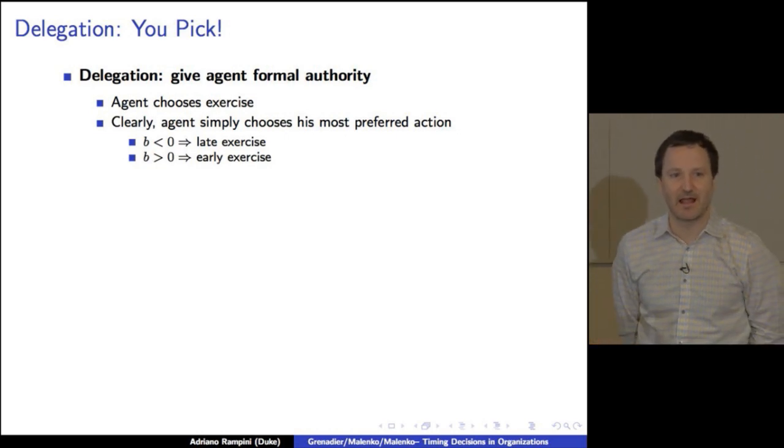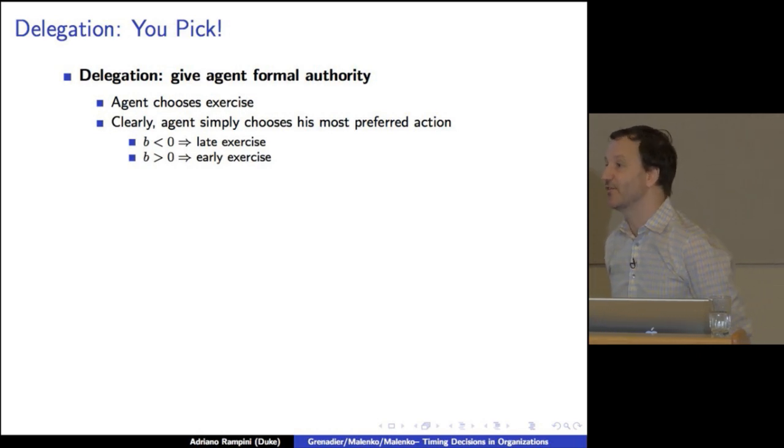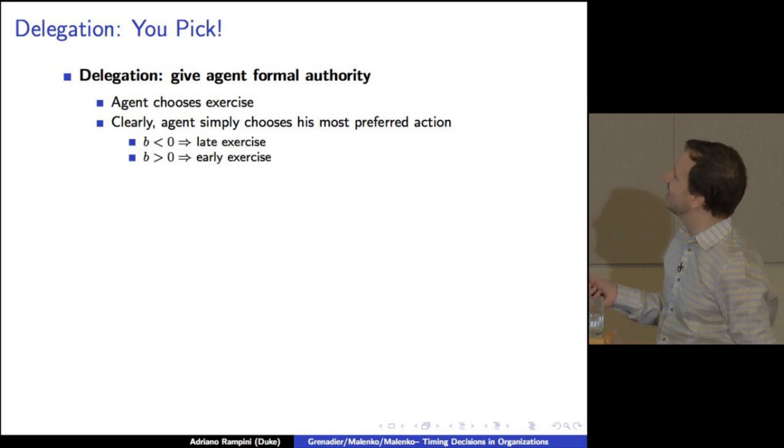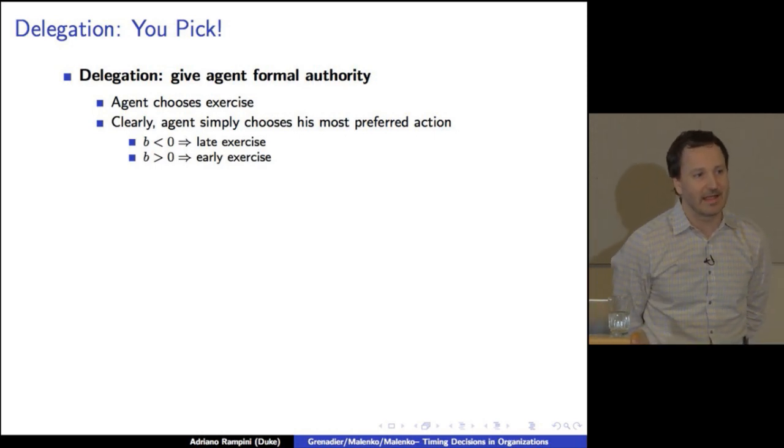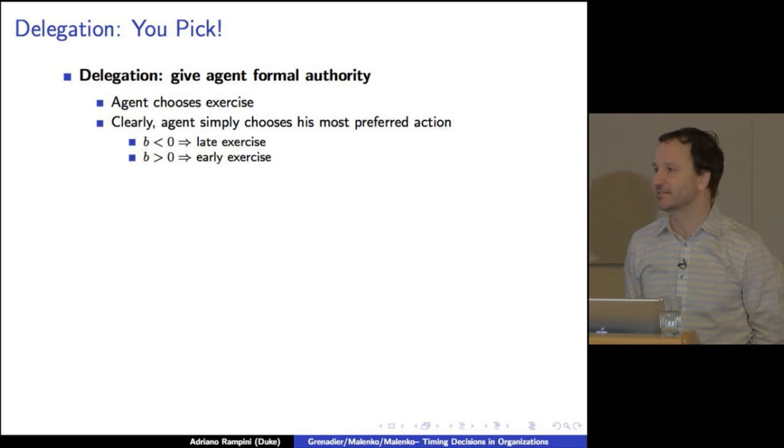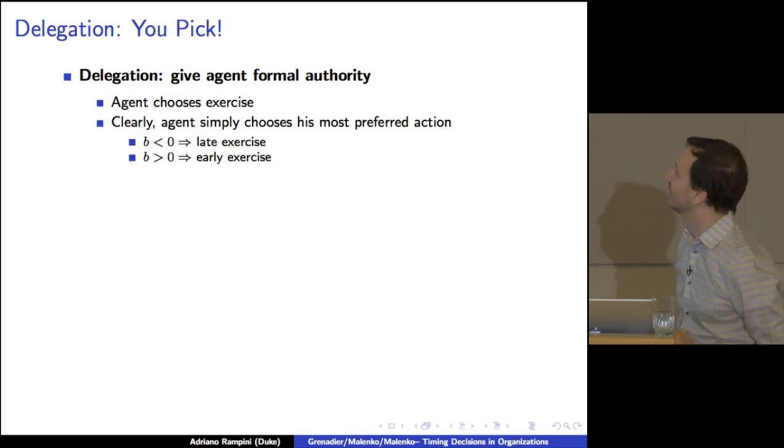Let's talk briefly about the value of delegation. So delegation, what is delegation? Again, it's just essentially the principal telling the agent, giving the agent formal authority, which is essentially telling the agent, why don't you pick? Okay. Well, it's easy to see what the agent will do. What will the agent do when he gets to pick? Well, he's just going to pick whatever is optimal for him because there's no other contracting or anything else that we can do. So if he dislikes exercise, he's going to exercise late. If he likes it, he's going to exercise early.